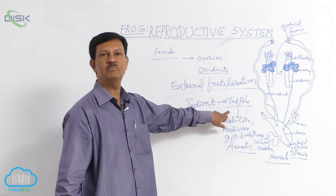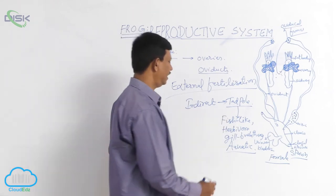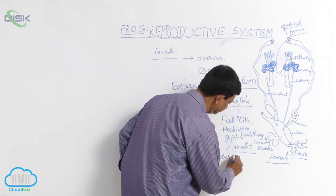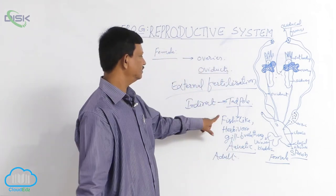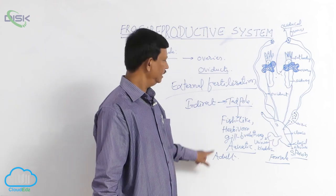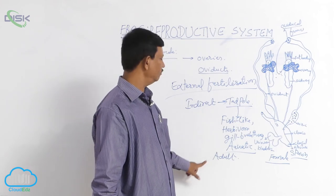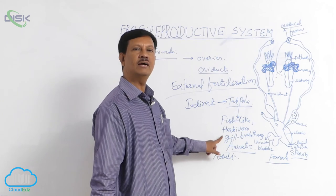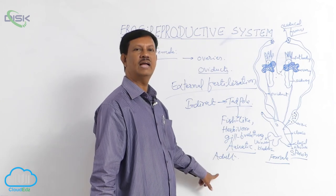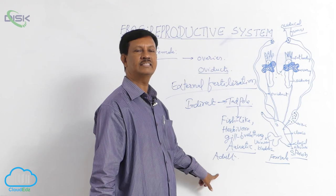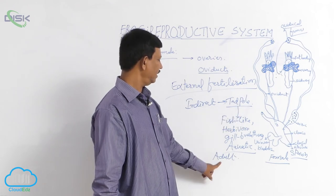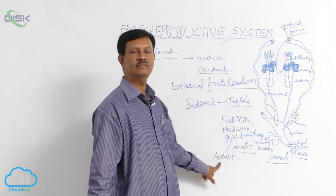The tadpole undergoes metamorphosis and finally becomes an adult. During metamorphosis: fish-like appearance becomes terrestrial form, herbivore becomes carnivorous, gill breathing changes to lung breathing, and aquatic lifestyle becomes amphibious. Such changes occur during metamorphosis and finally it becomes an adult.